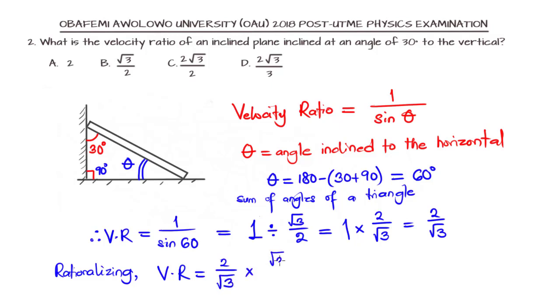We multiply it to the numerator and denominator as being shown. This will give us 2 root 3. Root 3 multiplied by root 3 will be root 3 raised to the power 2. The power and the roots will cut out. So we have 2 root 3 over 3, and that is the solution. Option D is the correct answer.